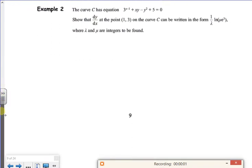This is the second set of examples for the third lesson on parametrics. I've got 3^(x-1) + xy - y^2 + 5 = 0. Show that dy/dx can be written as something times log of something.